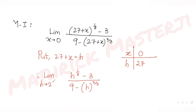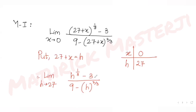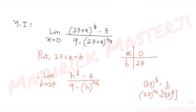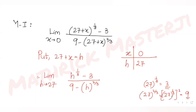So limit h tends to 27: the numerator is h^(1/3) minus 3. Since 27^(1/3) = 3, I can write 3 as 27^(1/3). For the denominator, 27^(2/3) = (27^(1/3))^2 = 3^2 = 9, so I can write 9 as 27^(2/3). The denominator becomes 27^(2/3) minus h^(2/3).